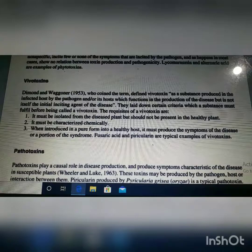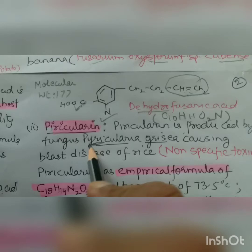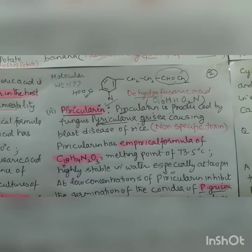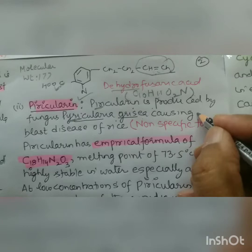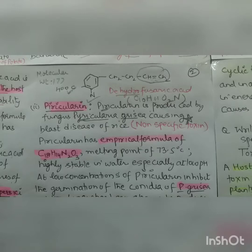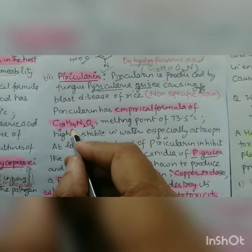Now moving to the second vivotoxin: pericularin. Pericularin is produced by the fungus Pyricularia grisea (earlier called Pyricularia oryzae), causing blast disease of rice. It is a known non-specific toxin. Pericularin has an empirical formula C₁₈H₄₀N₂O₃, melting point 73.5°C, and is highly stable in water especially at low pH. At low concentration, pericularin inhibits the germination of conidia of Pyricularia grisea.